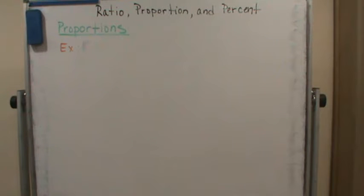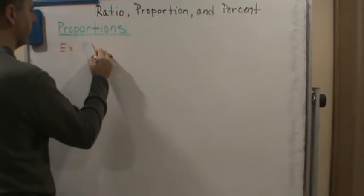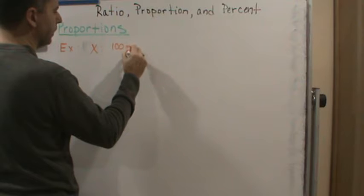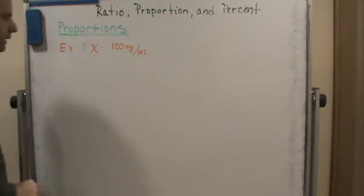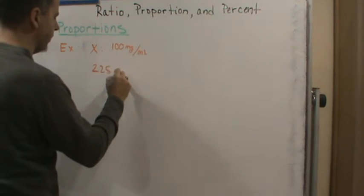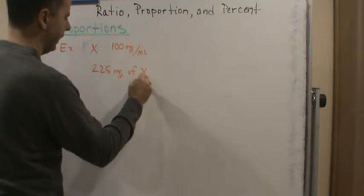For medications provided in a liquid formulation, the amount of liquid given to a patient depends on the concentration of drug in the fluid. Medication X is available only in a liquid formulation with a concentration of 100 milligrams per milliliter. So medication X has a concentration of 100 milligrams per milliliter. Suppose a physician orders 225 milligrams of medication X. So the doctor orders 225 milligrams of X.